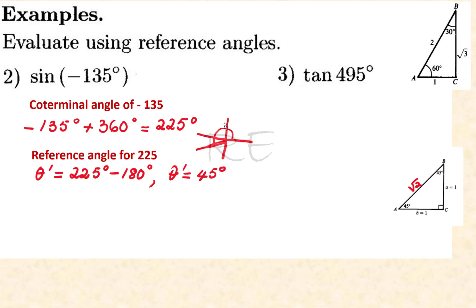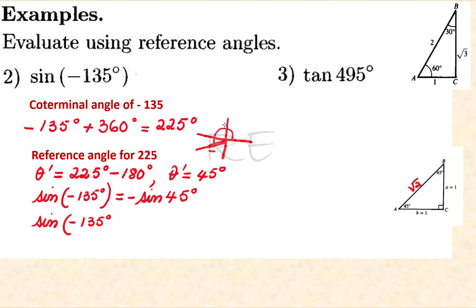Keep in mind that sine is negative in the third quadrant. Sine of negative 135 is equal to negative sine of 45 degrees, since the sine of the reference angle is always positive, so we need to take its opposite. That gives negative 1 over square root of 2, which when rationalized is negative square root of 2 over 2.